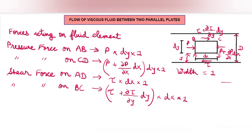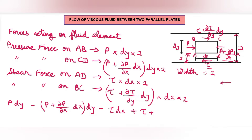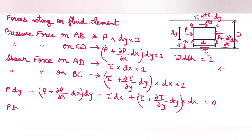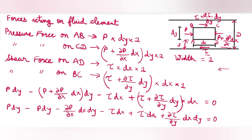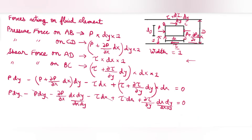The net force acting in the x-direction is equal to zero. Both pressure forces act in the backward direction, so their signs are negative. Writing the equilibrium: P·dy − [P + (∂P/∂x)dx]·dy − τ·dx + [τ + (∂τ/∂y)dy]·dx = 0. Opening the bracket and dividing by dx·dy, we get −∂P/∂x + ∂τ/∂y = 0, that is ∂P/∂x = ∂τ/∂y.